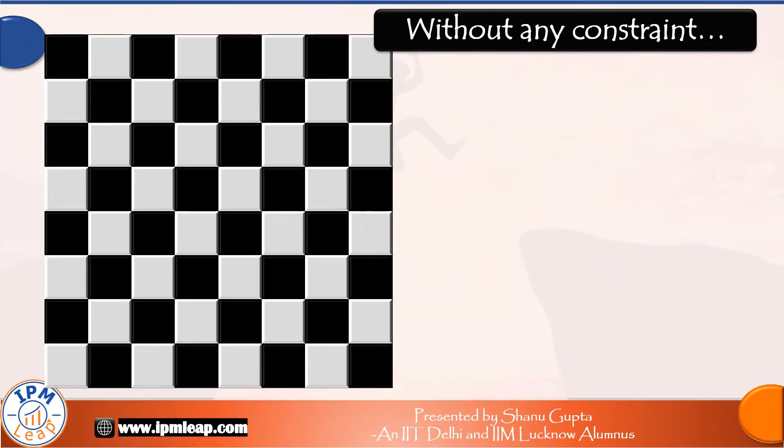So you know the question: pick two squares, one white and one black, such that they don't lie in the same row or column. We already know that there are a total of 8 into 8, 64 squares on a chessboard. Half of them, that is 32, are white and the other half, 32, are black.